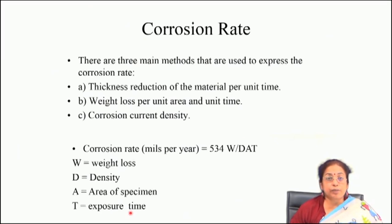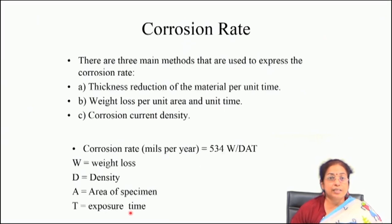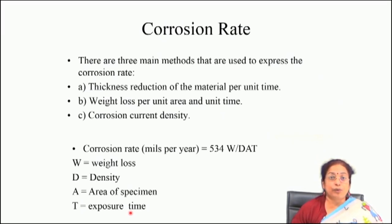Corrosion rate can be measured by three different ways: thickness reduction of the material per unit time, weight loss per unit area per unit time, or corrosion current density. Thickness reduction and weight loss are standard approaches, and people typically do standard coupon testing for measurement of corrosion behavior in a simulated environment. You can also accelerate rate determination by electrochemical testing where corrosion current density is taken as the measure of corrosion rate. Corrosion rate can be calculated by applying Faraday's law and is usually presented in terms of mils per year.